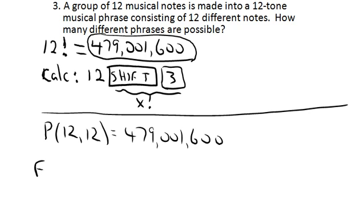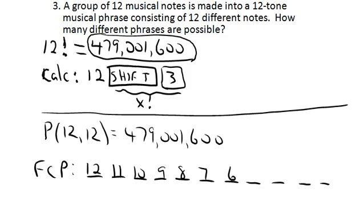And you could also use the fundamental counting principle, which would just say that you have 12 spots to fill. You can choose any of the 12 notes for the first time. Then you can choose 11, then 10, then 9, then 8, then 7, then 6, then 5, then 4, then 3, then 2, then 1, so the product of all those numbers is the answer.